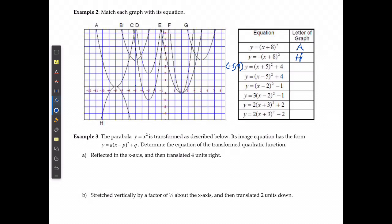For the next one, it's going to be the opposite. It has a p value of positive 5 and positive 4. The only one that has a vertex at 5 and 4 is going to be G.